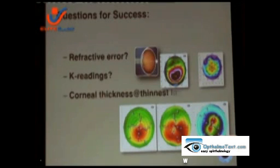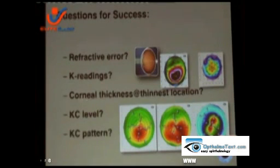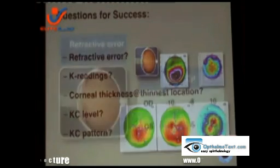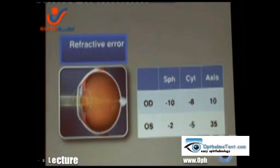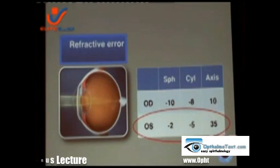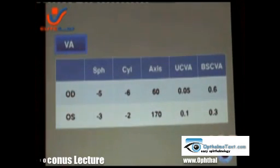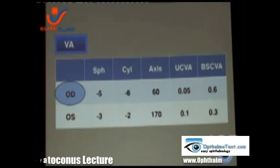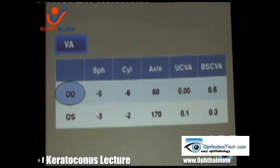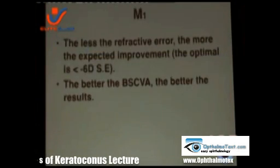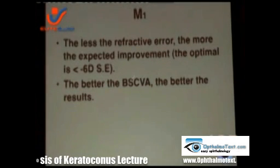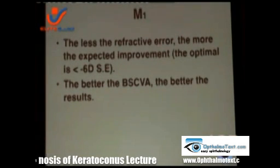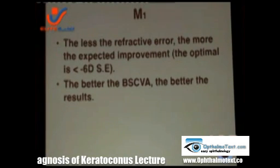Some questions to consider: What is the refractive error? What are the K readings? What is the corneal thickness at the thinnest location? And what is the keratoconus level and pattern? Regarding the refractive error, logically, if we have a small refractive error, we will have good results with rings. And when we have good best corrected visual acuity, we will end up with better results, even if the refractive error is bigger. The optimal results can be achieved when we have a spherical equivalent of less than minus 6 and the best corrected visual acuity is acceptable.